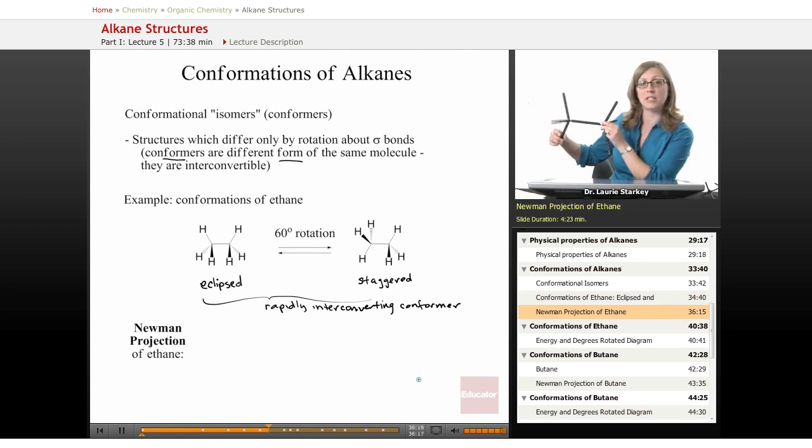Now one way that you can really see why we call these eclipsed and staggered conformations is when we view the molecule not sideways like we did in the 3D sketch, but we view it in this way where we're viewing down the carbon-carbon bond.